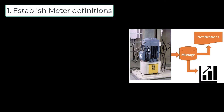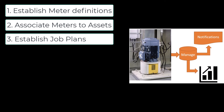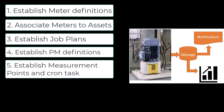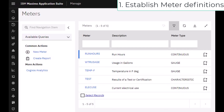We're going to cover six easy steps. First, you establish your meter definitions. Then you associate those meters to your assets or locations. Third, you establish the job plans that describe the tasks you want the responders to perform. Fourth, you establish the PM definitions that bring the asset, job plan, and generated work order details together. The new part will be establishing your measurement points and setting the thresholds. Don't forget to activate the cron task that monitors and generates the work orders, and finally you update your meters either manually, by way of an interface, or using inspection forms.